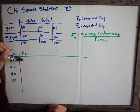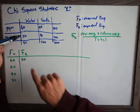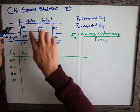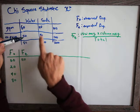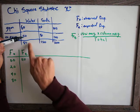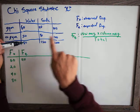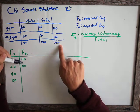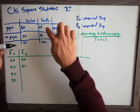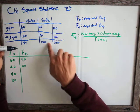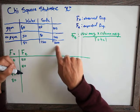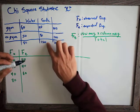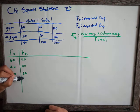So we put 40 for gym and water. For water and no gym, we go all the way across — that's 100 — multiplied by 80, which is 8,000, divided by 200, giving 40 again. For soda and gym, that's 100 times 120, which is 12,000 divided by 200, giving 60. The same for soda and no gym: 100 times 120, which is 12,000 divided by 200, giving 60.